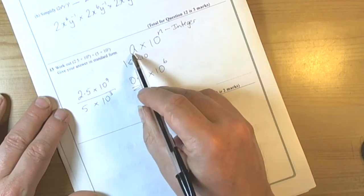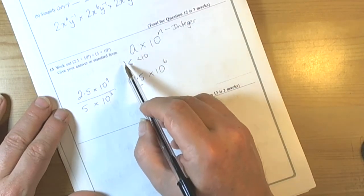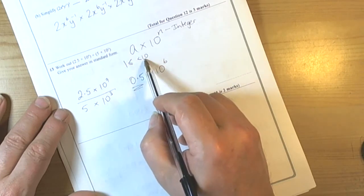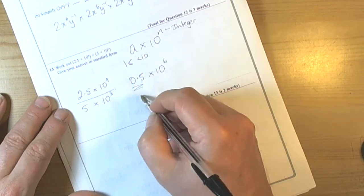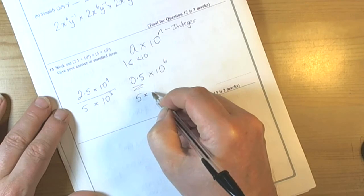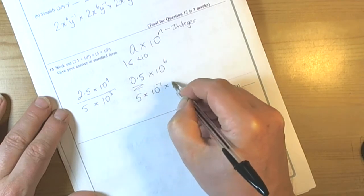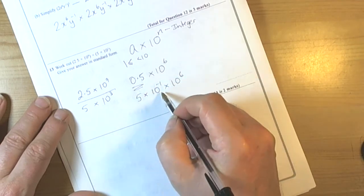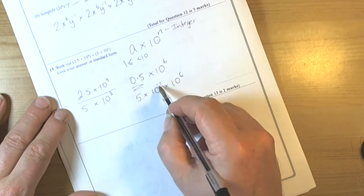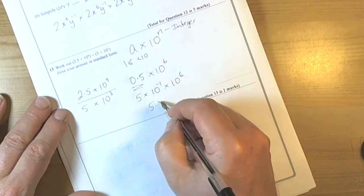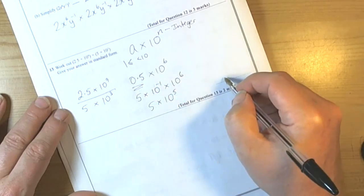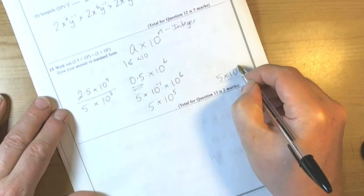Gotta be careful because standard form numbers must start with something between 1 and less than 10. So this needs to move up a place value. So this was 10 to the minus 1 times 10 to the 6. So basically add the powers, we end up with 5 times 10 to the power of 5.